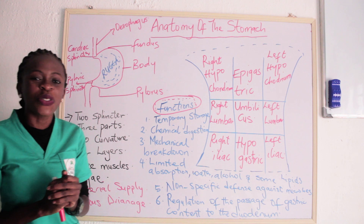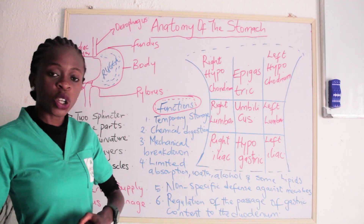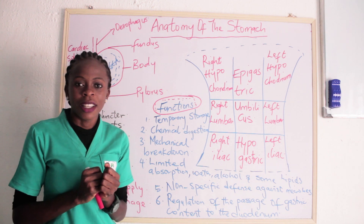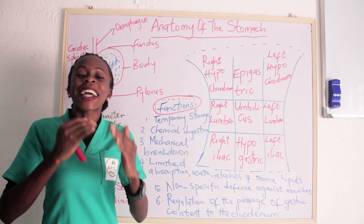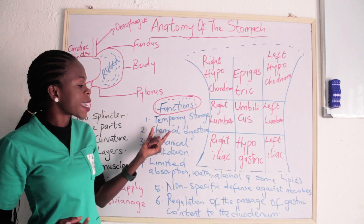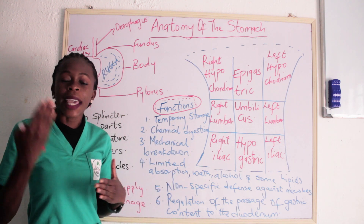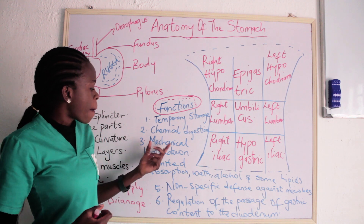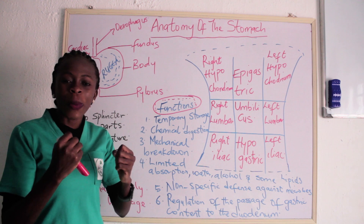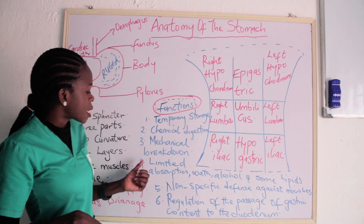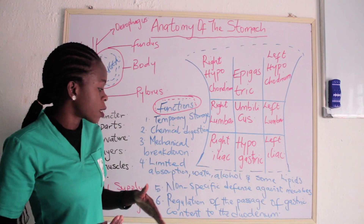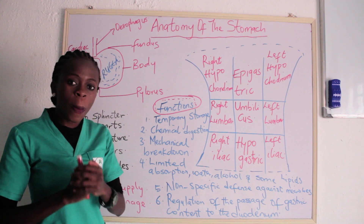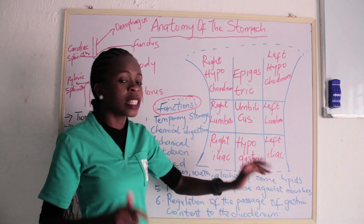Now let's talk about the functions of the stomach. The first function is temporal storage — the stomach helps us to store food temporarily before it is acted upon by enzymes. The second is chemical digestion of food, where pepsin acts on the food. The stomach also helps in mechanical breakdown of food, where the muscles churn the food. Another function is limited absorption — the stomach absorbs water, alcohol, and some lipids. The stomach also provides non-specific defense against microbes.